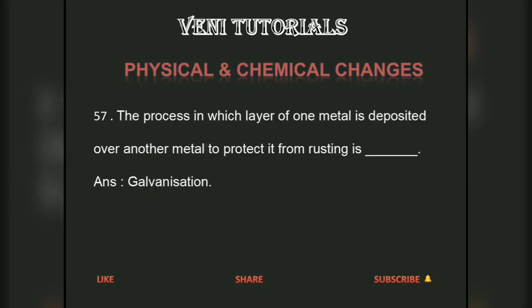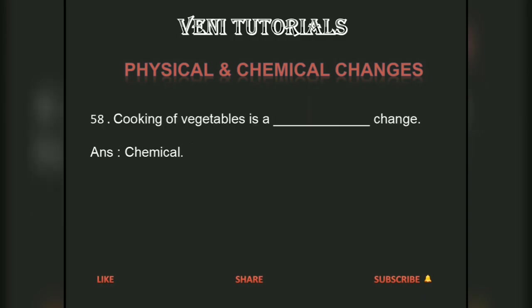The process in which a layer of one metal is deposited over another metal to protect it from rusting is called galvanization. Cooking of vegetables is a chemical change.